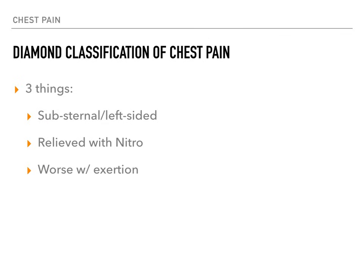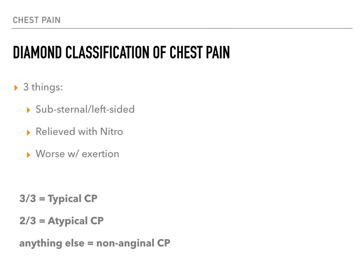If a patient has all three of these features, they would have three out of three, which would be called typical chest pain. If they only have two of these features, they would have what's called atypical chest pain. And if they had one or zero of these features, they would have what we call non-anginal chest pain.